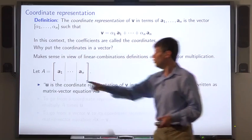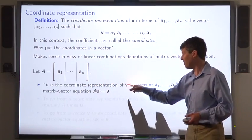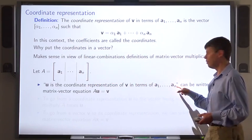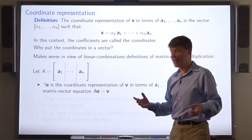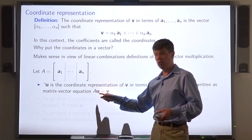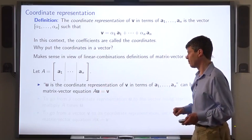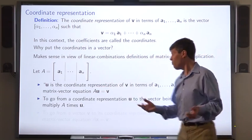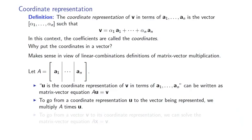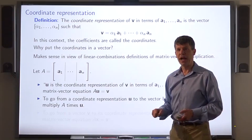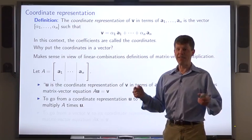Then when we say u is the coordinate representation of a vector v in terms of a1 through an, we can rewrite that as the statement that A times u equals v. So to go from a coordinate representation u to the vector being represented, say v, we multiply A times u. I call this rep to vec.